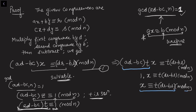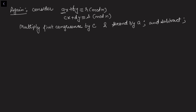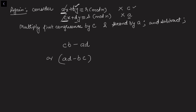The coefficient of x is now 1, so we have the unique solution x ≡ t(dr - bs) (mod n). Now I'll repeat the procedure but this time eliminating x to find y. Looking at the same congruences, the coefficient of x is a in the first and c in the second. So multiply the first congruence by c and the second by a, then subtract. The x terms cancel, and we get terms with bc and ad.